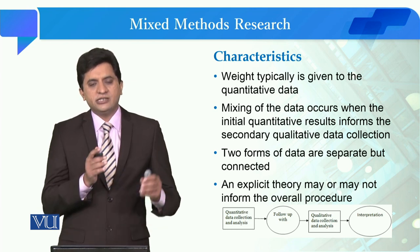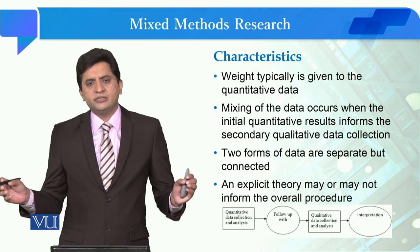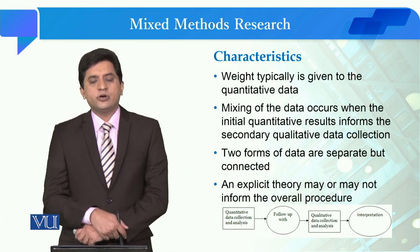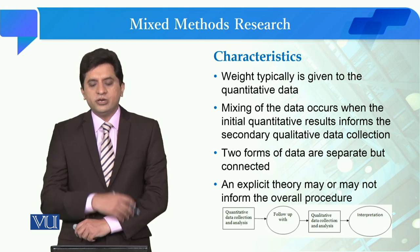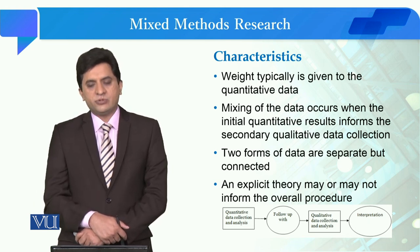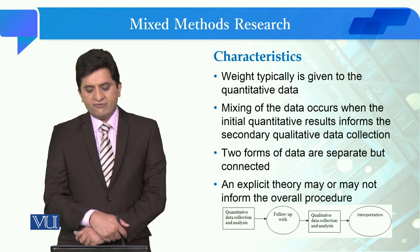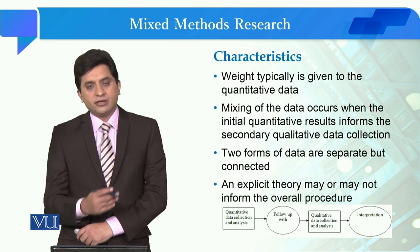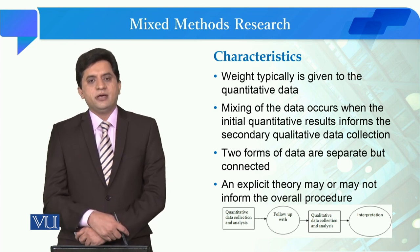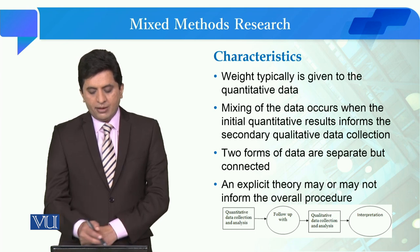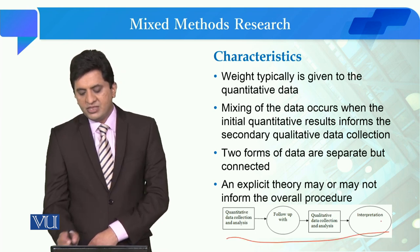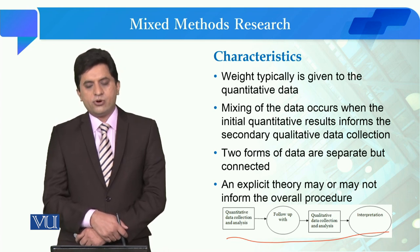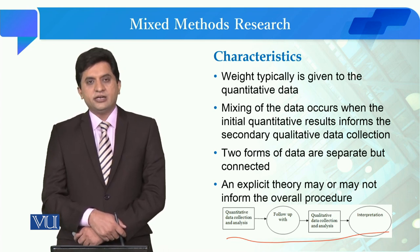Two forms of data are separate but connected — यह हमने separately collect किये हैं but we try to make a connection between them. यानि हम quantitative findings को confirm करते हैं through qualitative data. An explicit theory may or may not inform the overall procedure — sometime हम proper theoretical background से जा रहे होते हैं, sometime हم इसको use नहीं भी कर रहे होते। Procedure यह है कि पहले आप quantitative data collect करते हैं और उसके بعد follow up में qualitative data के लिए जाते हैं।